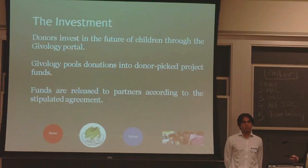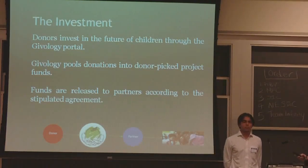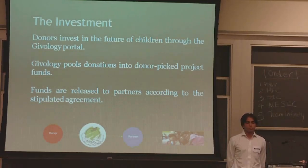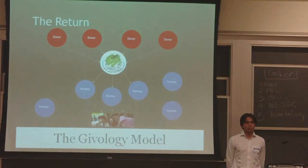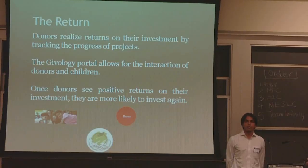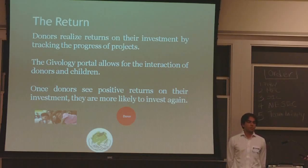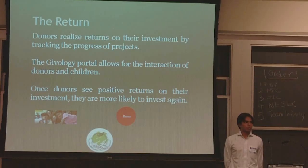Donors can invest in the future of children through the immunology portal, and immunology pools these donations into donor-picked project funds, which are released to partners according to the stipulation of return. Donors realize returns directly from their investments by tracking the progress of individual projects, and the immunology portal allows for direct interaction between the donors and the children. Once donors see a positive return, they're more likely to invest further in the future.